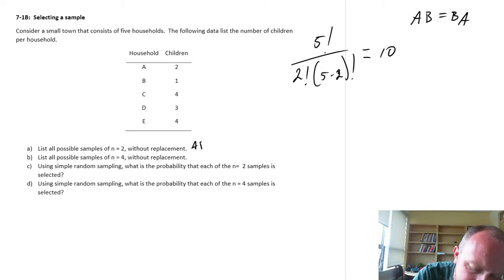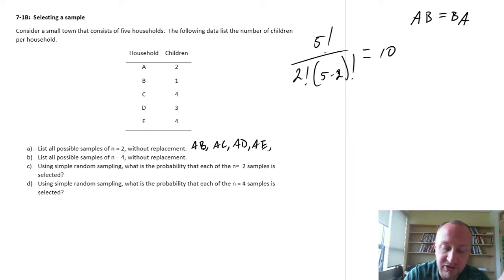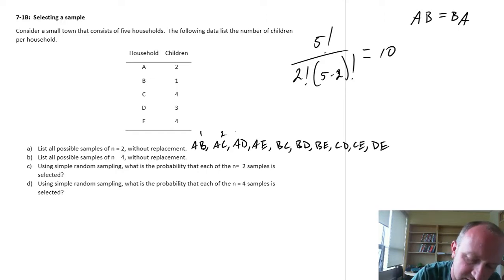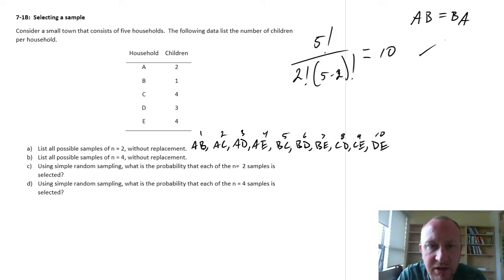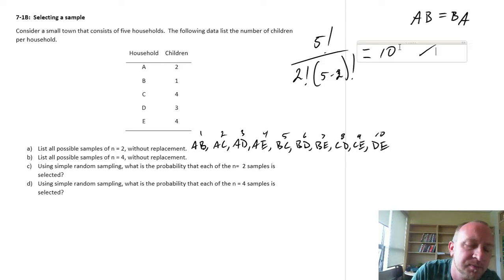If I just write them down: AB, AC, AD, AE - those are all the ones that contain A. Then BC, BD, BE. Next we have CD, CE, and finally DE. So that should be 10: 1, 2, 3, 4, 5, 6, 7, 8, 9, 10. There's our 10 different combinations of two elements out of a population of 5.